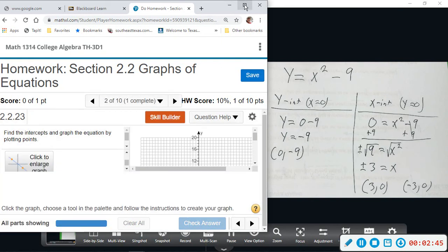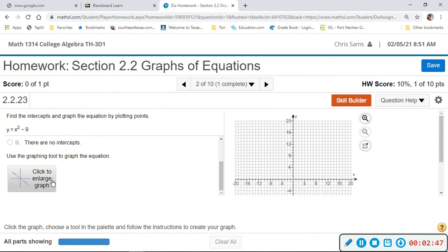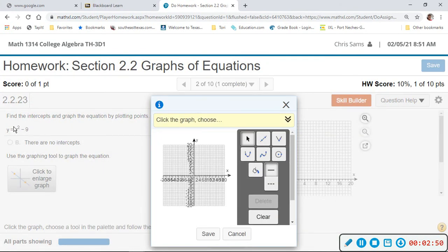This equation is x squared, so you need the parabola. And you can kind of see they're showing you how many points you need. So this is what I need, and then I'm going to plot those intercepts.